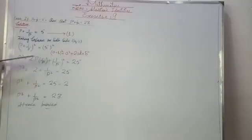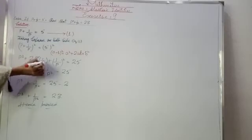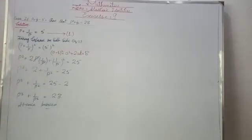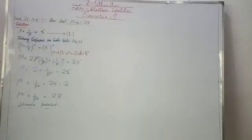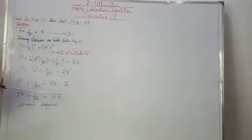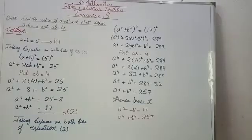In the middle term, 2 × p × (1/p) — the p cancels, leaving just 2. So we have p² + 2 + 1/p² = 25. Transposing the 2: p² + 1/p² = 25 − 2 = 23. Hence proved.